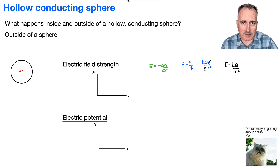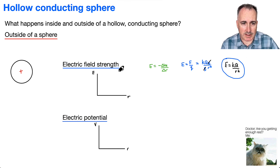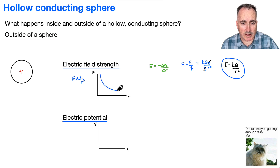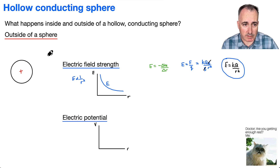That means E is going to be proportional to 1 over R squared. If that's the case, it's going to look something like this — that'll be the electric field outside of the sphere.